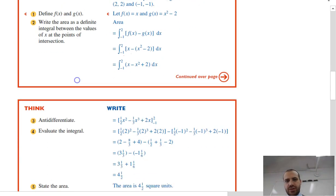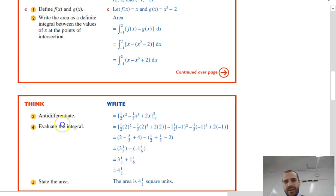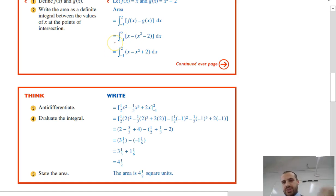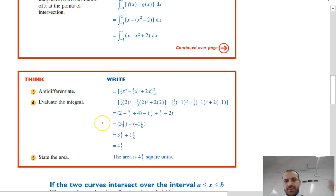That gives us a new function of x minus x squared plus 2. And then we just integrate between 2 and negative 1, solve it. So, there's a bunch of work there, but you can see that's pretty much how it's done.